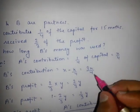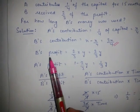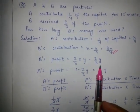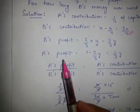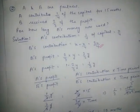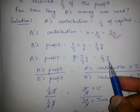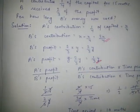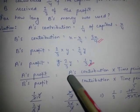B's profit is 2/3 of the total profit Y, which is 2Y/3. Solving for A's profit: total profit minus B's profit gives 1/3 of Y. According to the second rule, A's share of profit divided by B's share of profit equals the ratio of A's contribution multiplied by A's time period, divided by B's contribution multiplied by B's time period.